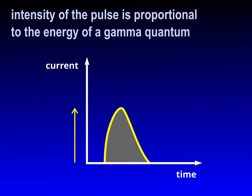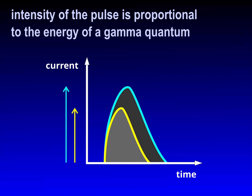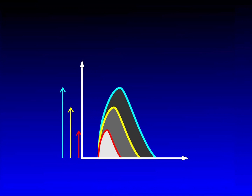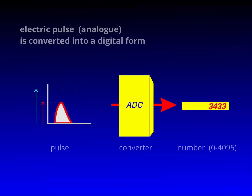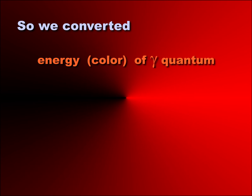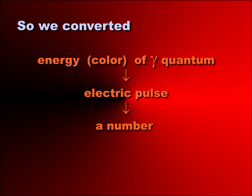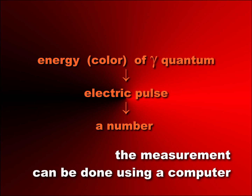So the gamma quantum we detected is converted into a pulse of electricity — the bigger the energy of the gamma, the bigger the pulse. Using an analog-to-digital converter, we can convert an electric pulse into a number in the range 0 to 4095. The bigger the pulse, the bigger the number. To summarize: the energy of the gamma quantum was first converted into an electric pulse, and then finally into a number. So now its energy is described by a number, and we can use the computer to do the rest of the measurement.